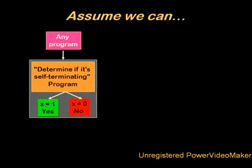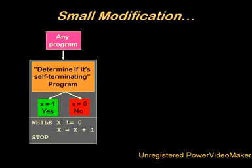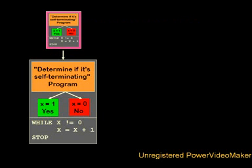And now, this is what I'm going to call my real 'determine if it's self-terminating' program. I'm going to make a small modification: right at the end of the program, I'm going to add our little code snippet — while x is not equal to 0, x equals x plus 1, stop. This means that if it determines the program in pink is self-terminating, this program won't terminate. If it determines the program in pink is not self-terminating, then this one will terminate. Just follow the x's. And now — the coup de grace — we feed it itself.